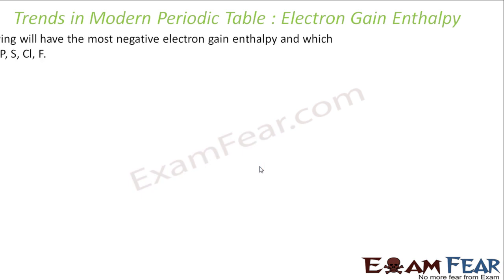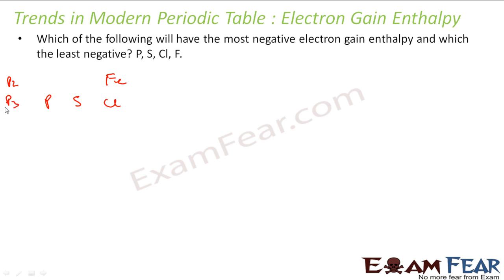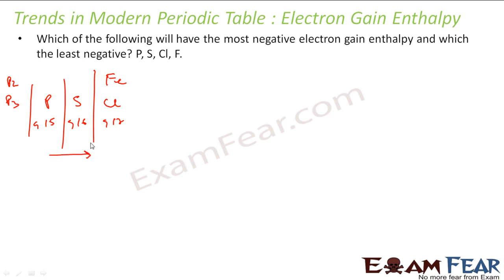Now the question is: which of the following has the most negative electron gain enthalpy and which has the least? If you talk about phosphorus, sulfur, and chlorine — phosphorus, sulfur, and chlorine are all part of period 3. And fluorine is in period 2. Phosphorus is a group 15 element, sulfur is group 16, and chlorine is group 17 — that is how they are arranged in the periodic table.